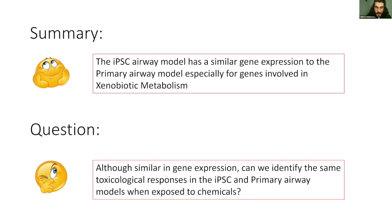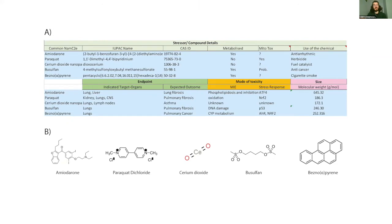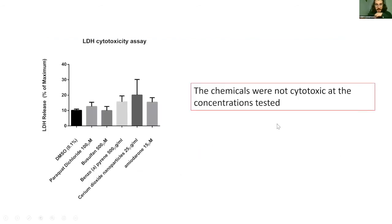To answer this question, we treated these models with five chemicals: amiodarone, paraquat, cerium dioxide, busulfan, and benzo[a]pyrene. All of these have a different mode of toxicity and activate different stress response pathways — for cerium dioxide, it is unknown, for example. But before we made any analysis, we checked for cytotoxicity to make sure it doesn't kill any of our cells, which it did not, because it was not significantly different to DMSO.